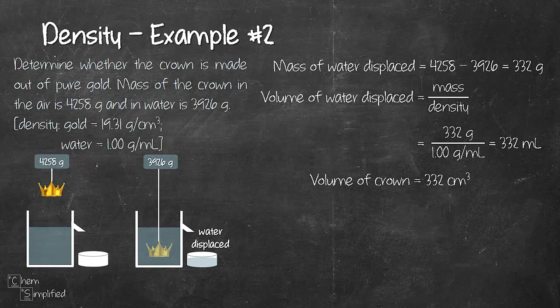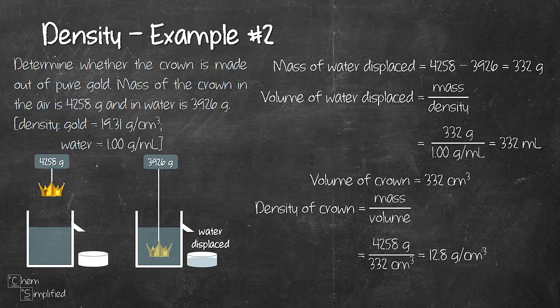So now that we have found the volume of our crown and we know the mass of our crown, the one that's in the air, we can apply the density formula and we can figure out what's the density of the crown. So we take the mass, which is 4258 grams, divide by 332 cm³, and that will give us 12.8 grams per cm³.